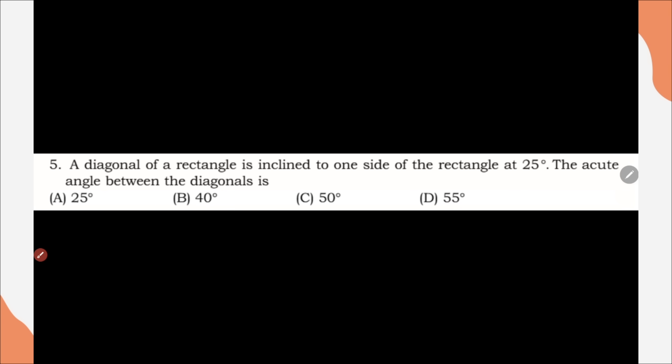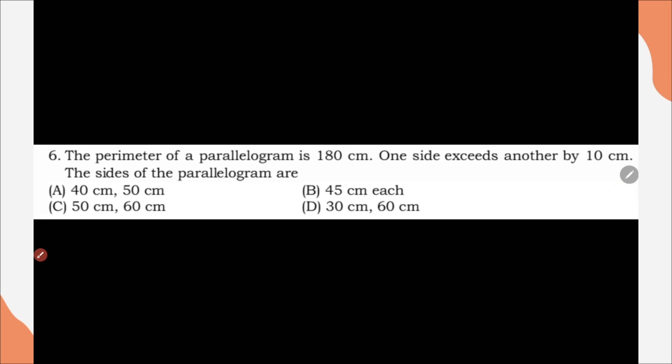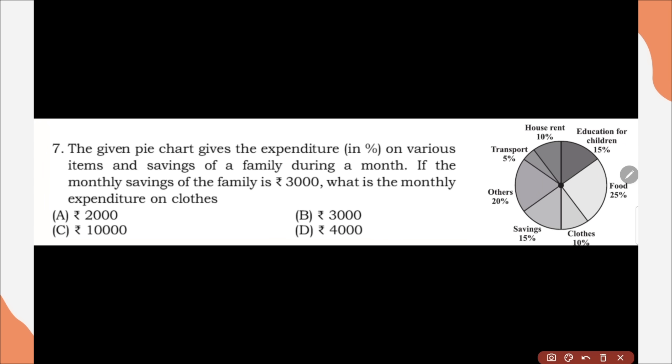Question number 5, a diagonal of rectangle is inclined to one side of rectangle at 25 degree. The acute angle between diagonal is, correct option is option C, 50 degree. Next question, the perimeter of a parallelogram is 180 cm. One side exceeds another by 10 cm. The side of the parallelogram are, correct option is option A, 40 cm and 50 cm. Question number 7, the given pie chart gives the expenditure in percentage of various items and saving of a family during a month. If monthly saving of family is 3000, what is the monthly expenditure on cloth? Correct option is option A, 2000.